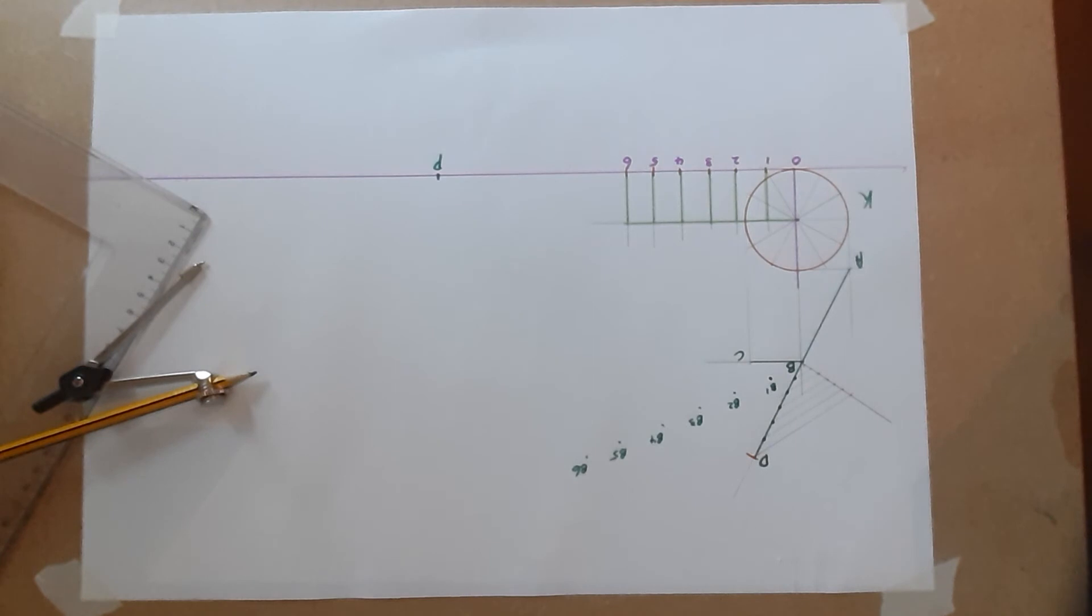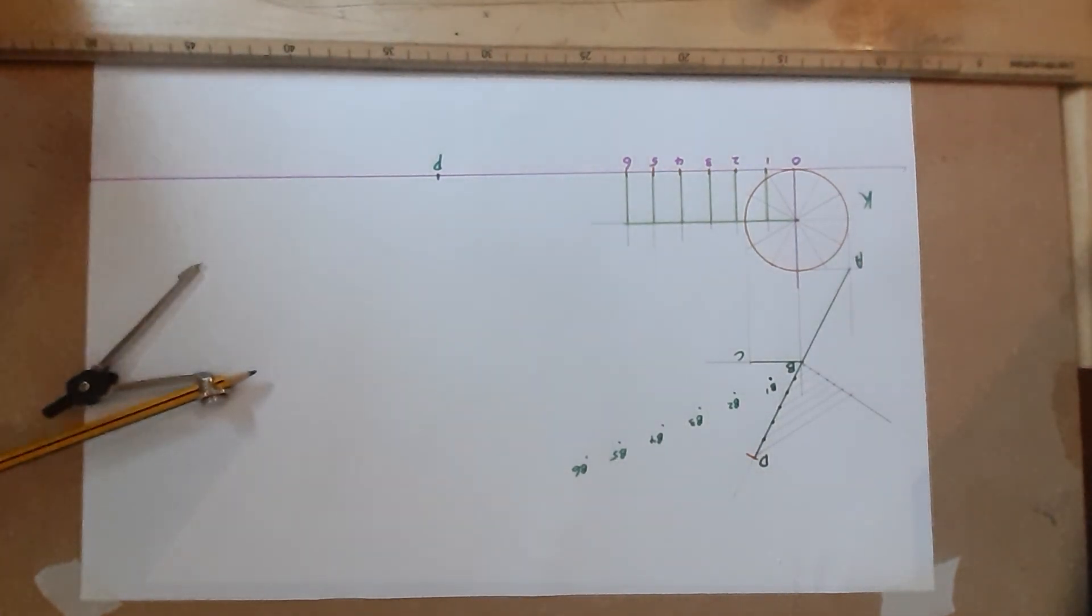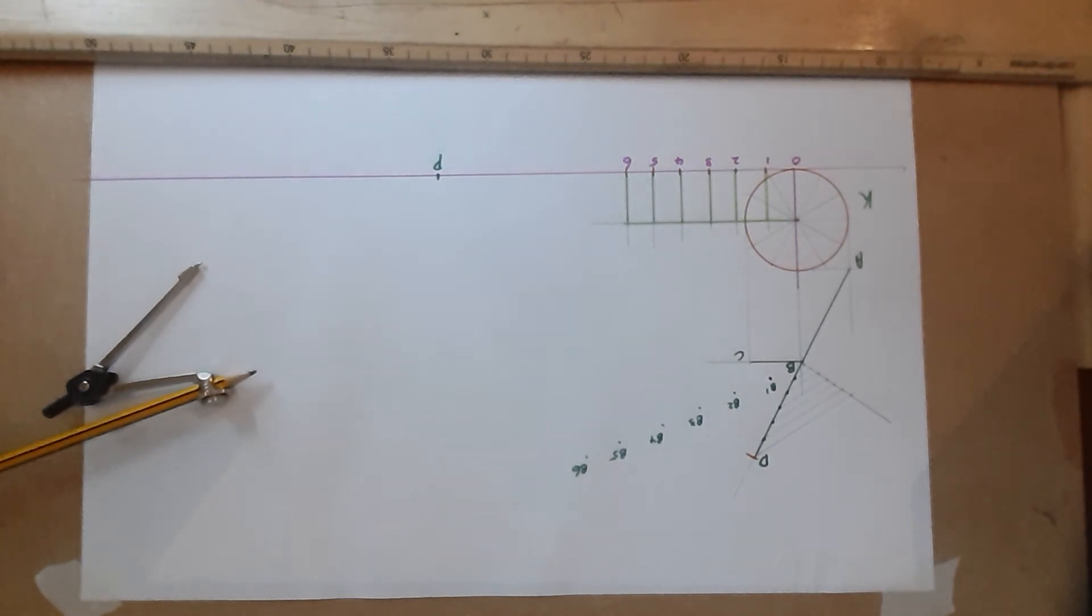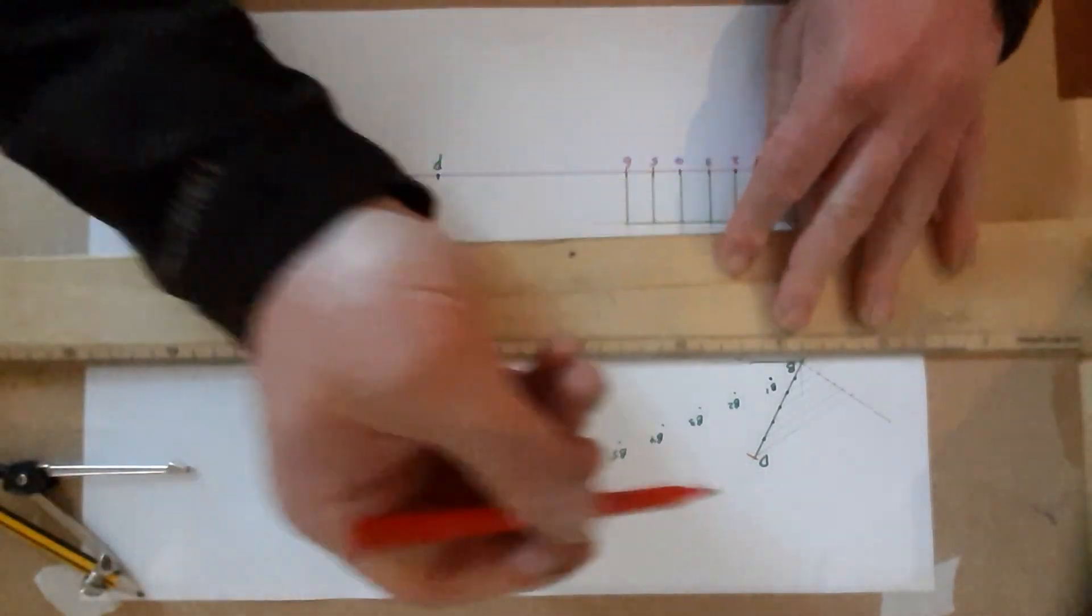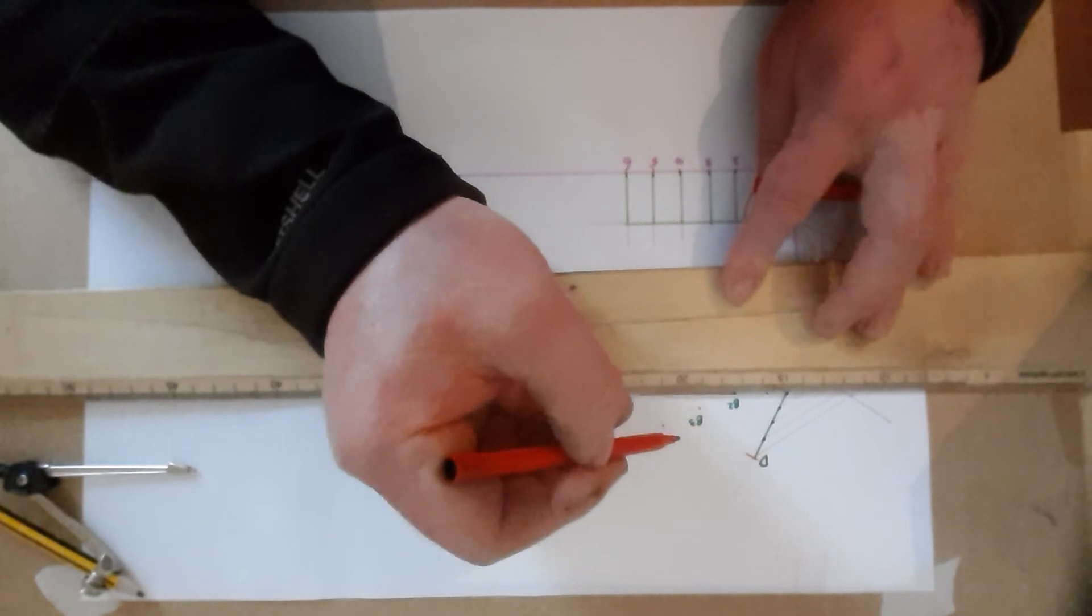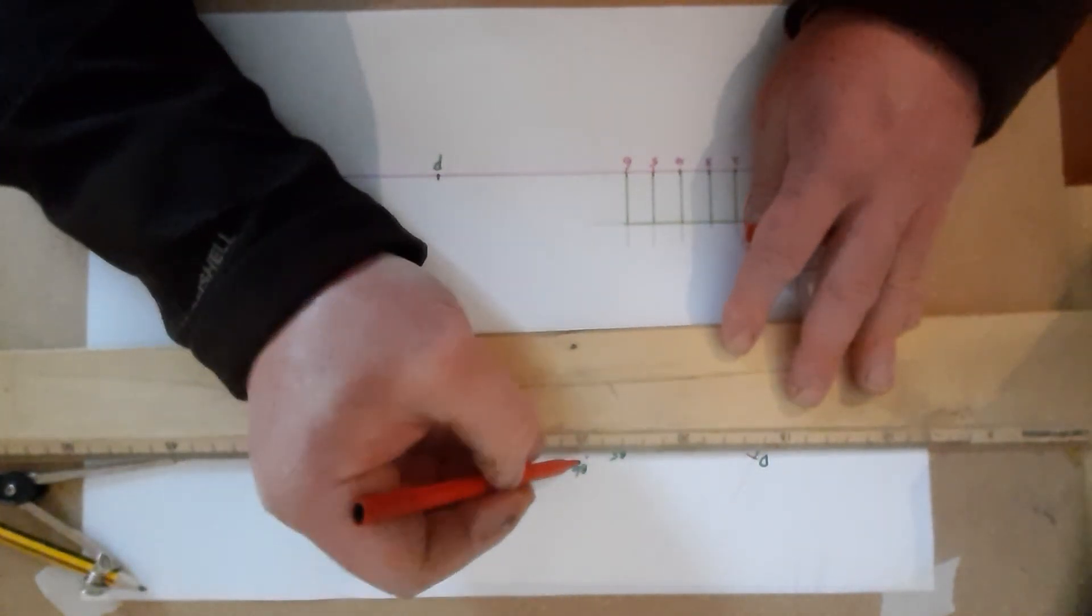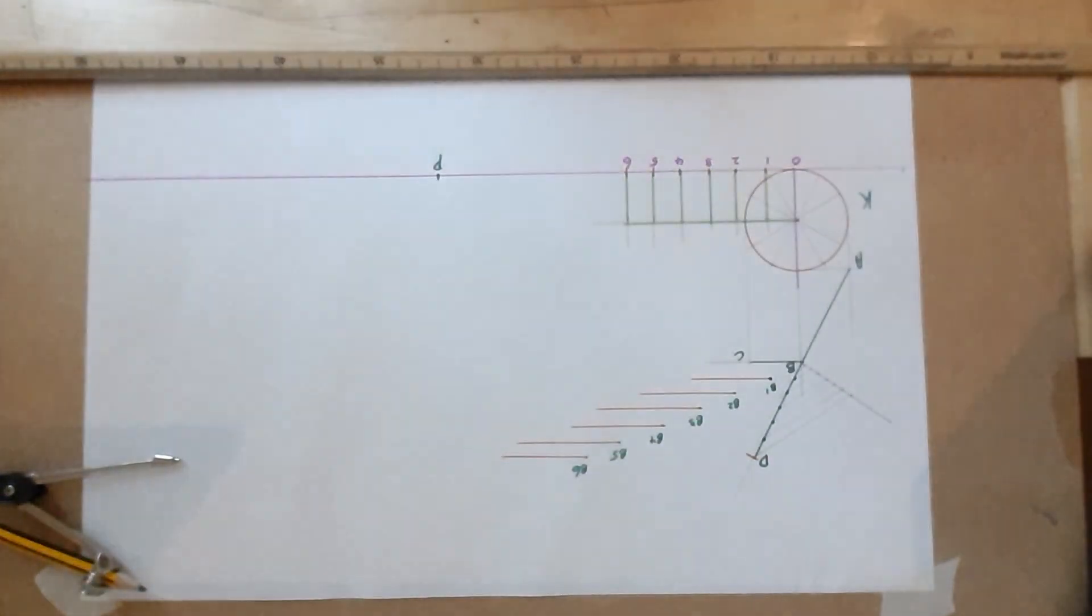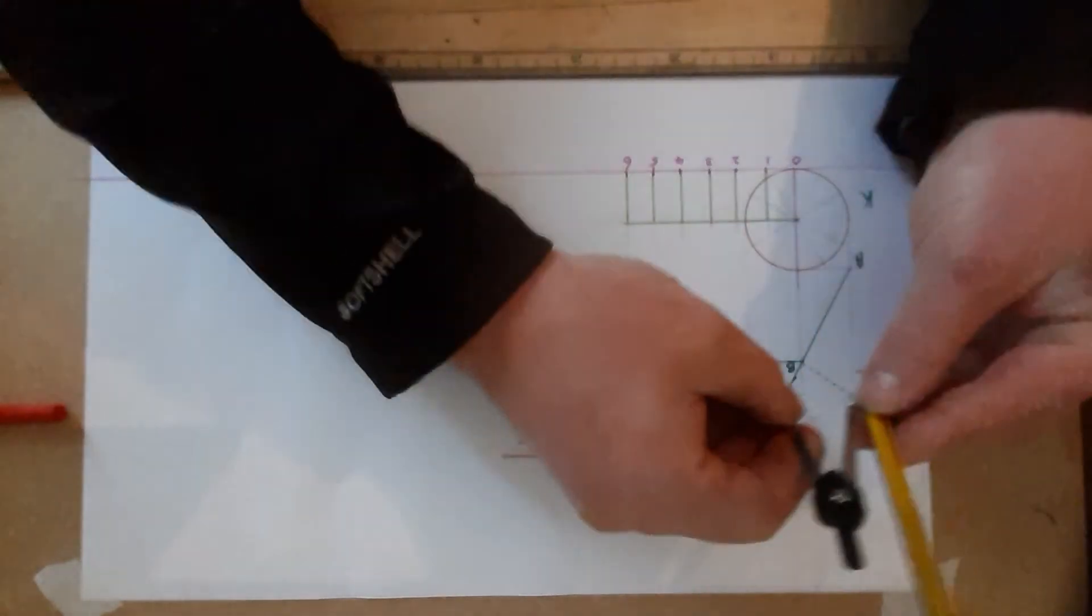And from each of these I'm going to draw a horizontal line, and that horizontal line has to be the same length as BC, and then that finds the location of C's, which allows you to plot the locus. So I'm just going to draw in a series of horizontal lines from each of those B points.